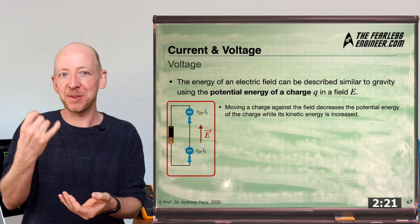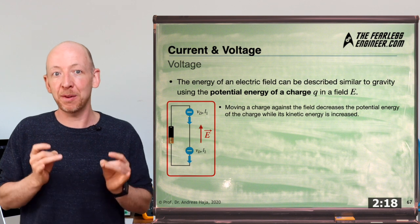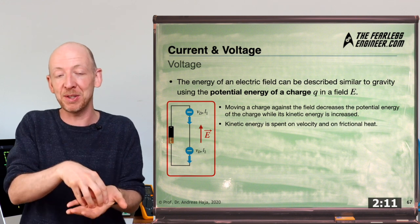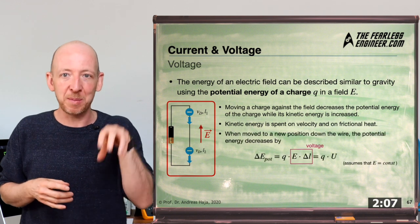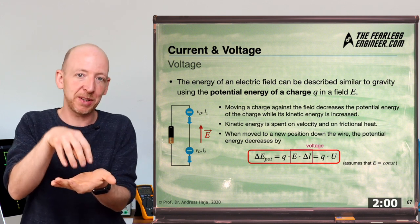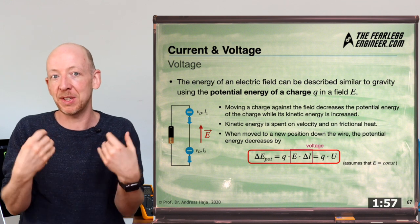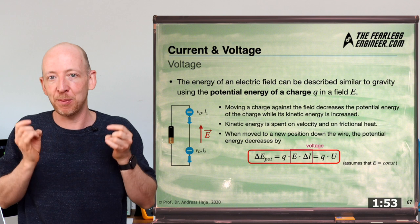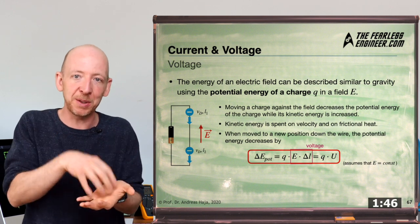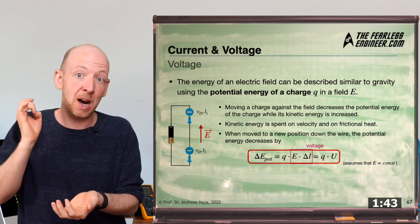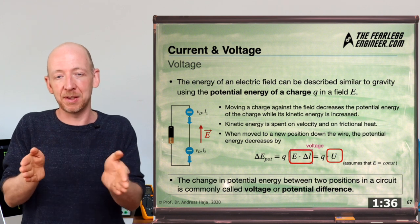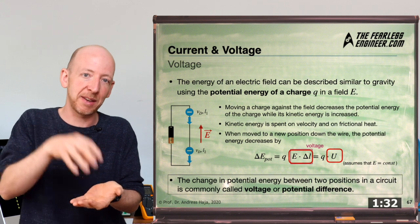We can describe the energy of an electric field very similarly to a gravitational field. Similar to the apple, we can describe the potential energy of a charge in an electric field depending on its relative position in that field. Moving a charge against the electric field decreases its potential energy while increasing its kinetic energy — this is the transport mechanism for energy into a circuit. We accelerate a large amount of charges and use their kinetic energy to power an electronic device, which is also why devices often get hot due to friction between electrons and the conductor material.